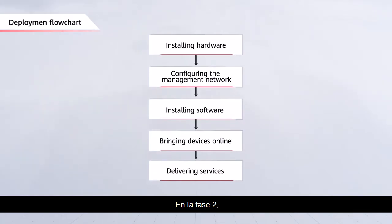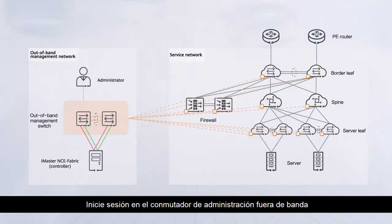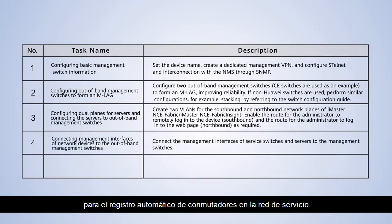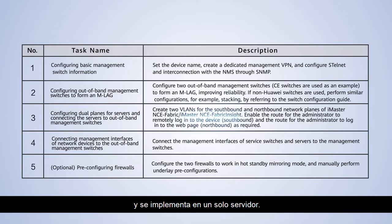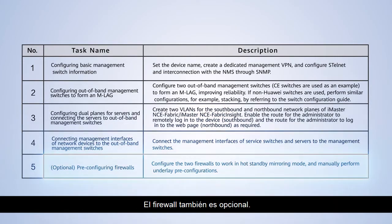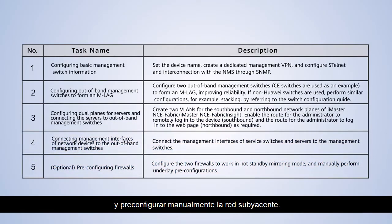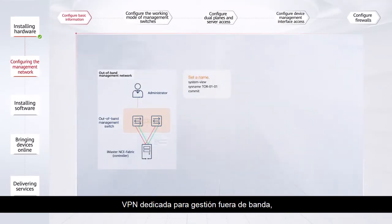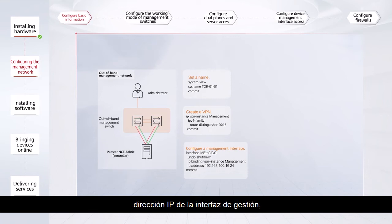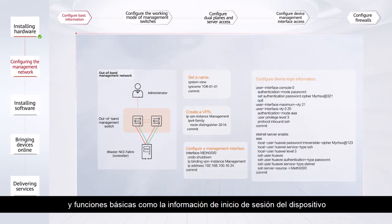In phase two, you need to configure the out-of-band management network. Log in to the out-of-band management switch and perform the following configurations to prepare for the automatic registration of switches on the service network. Note that the analysis platform iMaster NCE Fabric Insight is optional and is deployed on a single server. The firewall is also optional. You need to log into the firewall and manually pre-configure the underlay network. Here are some configuration commands: configure the device name, dedicated VPN for out-of-band management, IP address of the management interface, and basic functions such as device login information for the management switches.